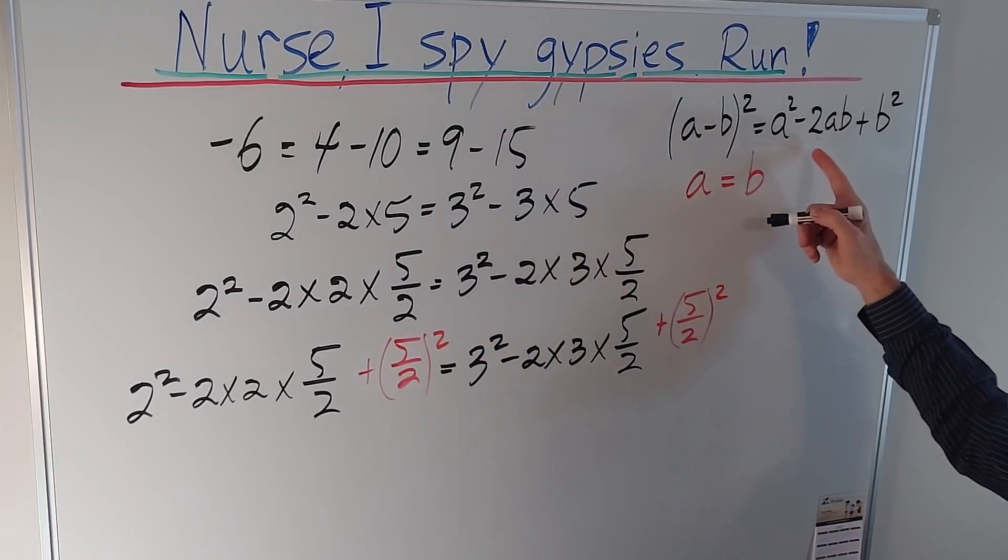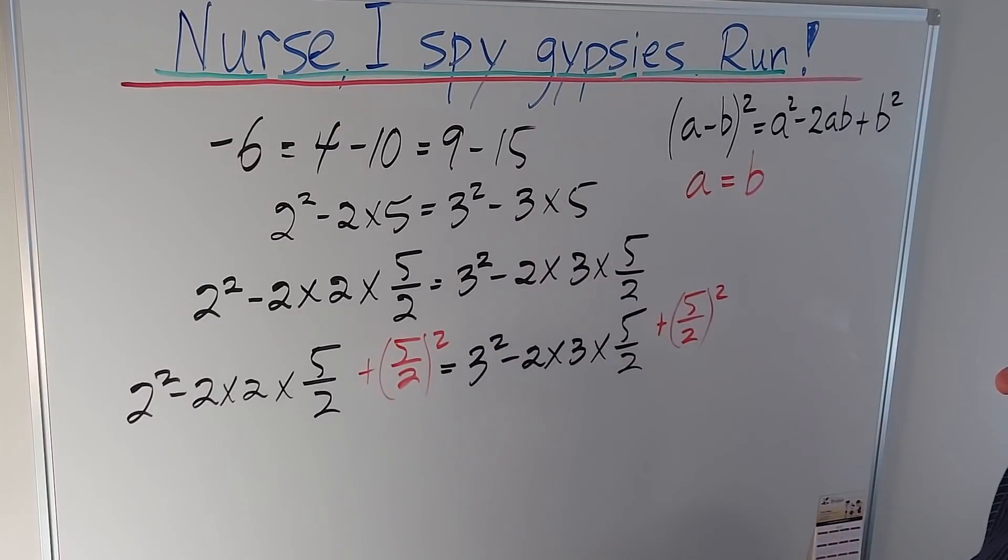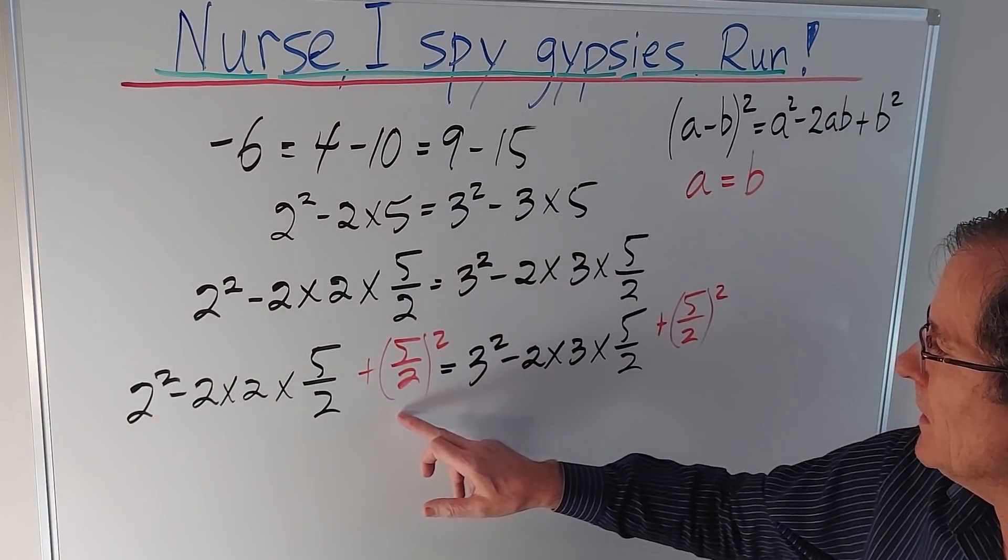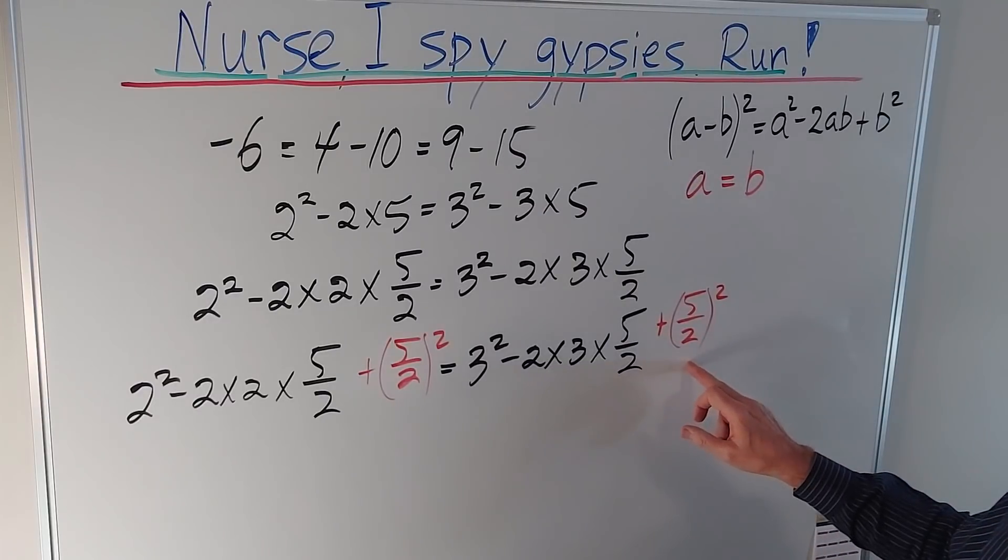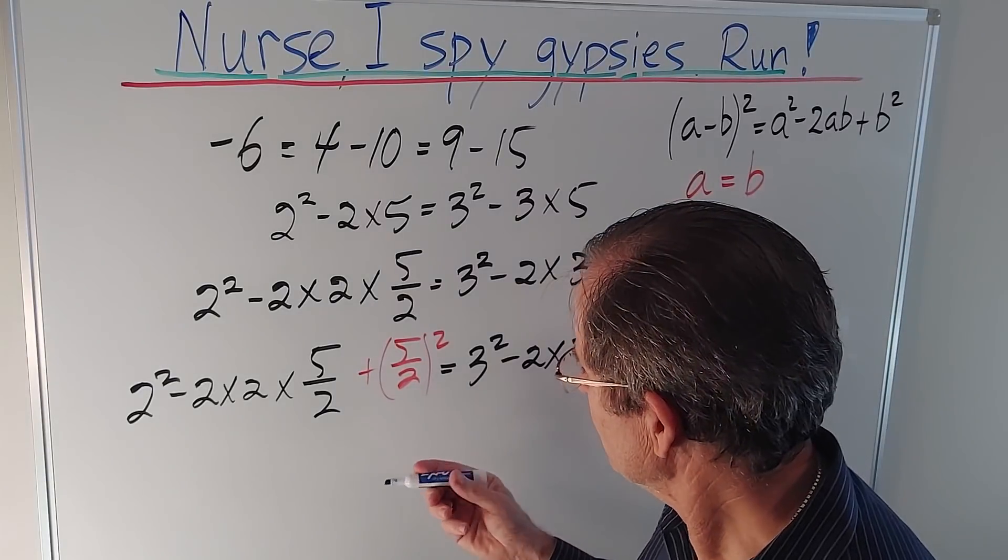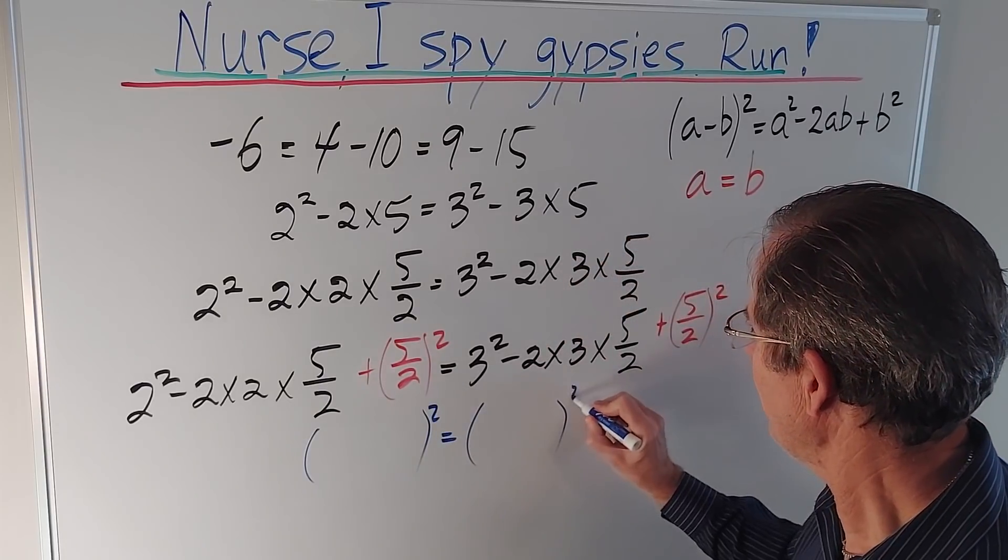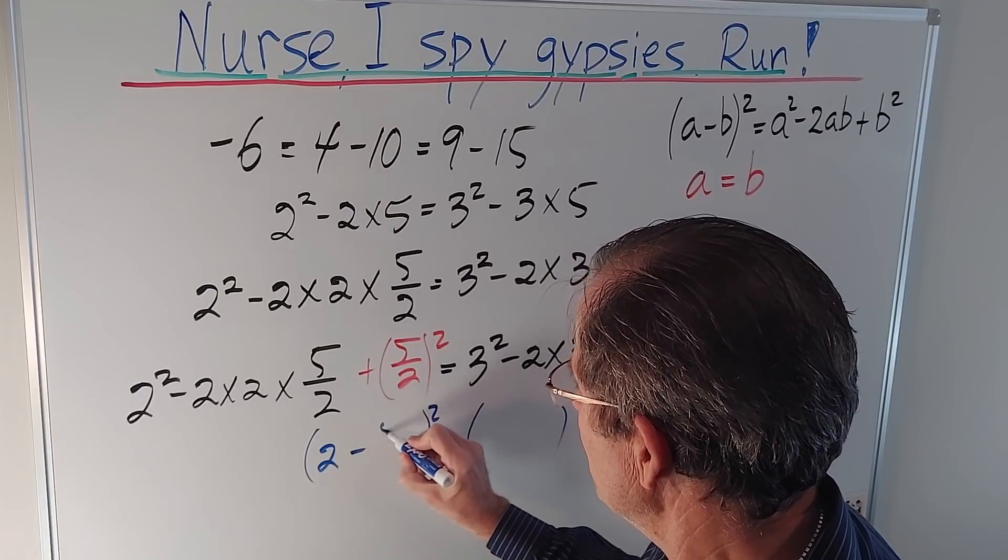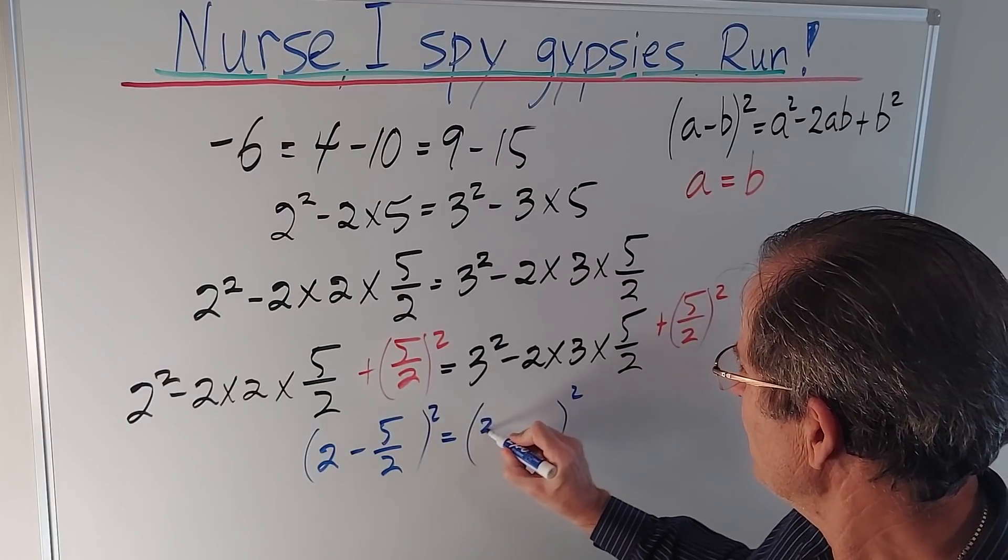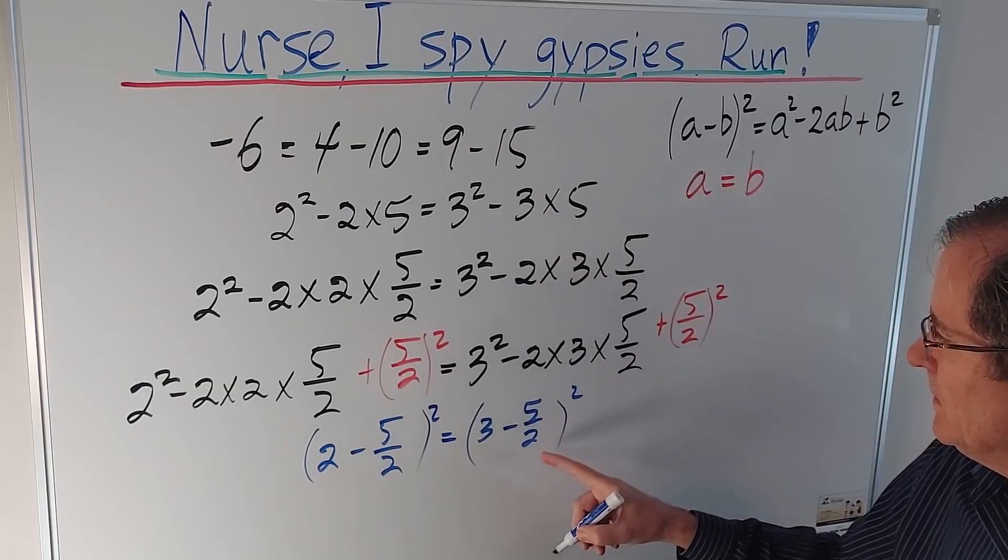Now if you go back to this identity, we can recognize each of these two expressions as a form of this, where in this case a is 2 and b is 5 over 2, and in this case a is 3 and b is still 5 over 2. So I can write those both as complete squares. First one being 2 minus 5 over 2, a from here, b from here, and this one being 3 minus 5 over 2. 3 from here, same b from there.